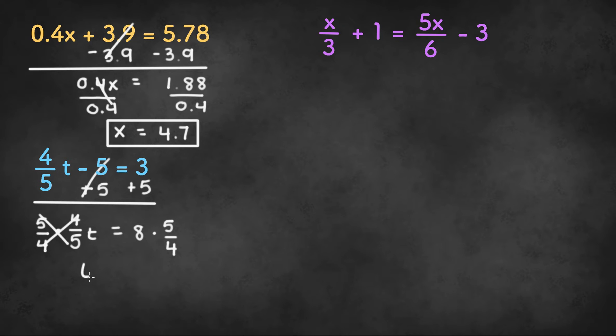That we're left with t on the left hand side. And 8 times 5 is 40. 40 divided by 4 is 10 on the right hand side. And that's our final answer.